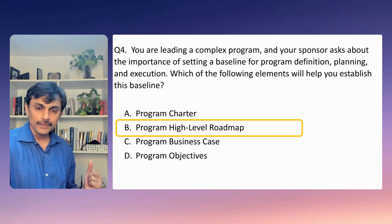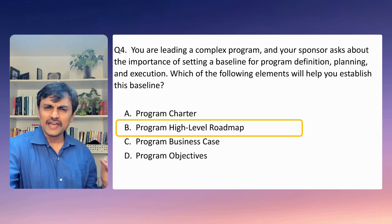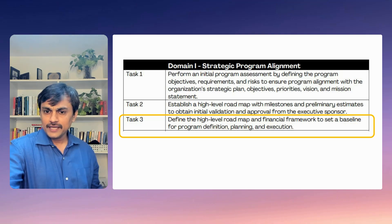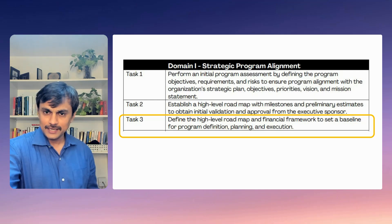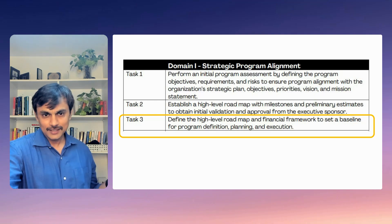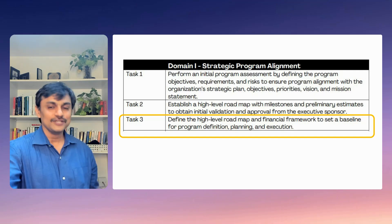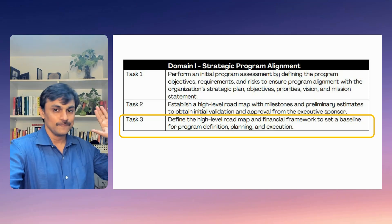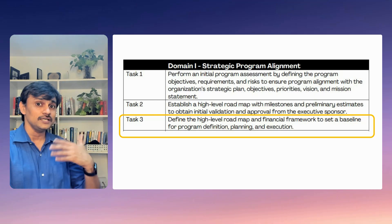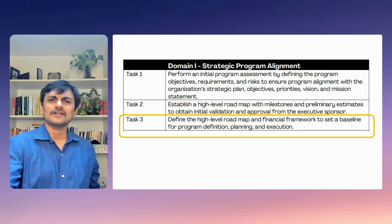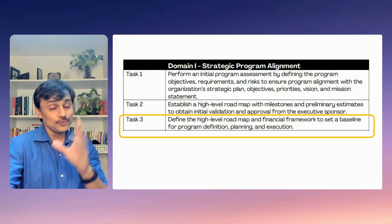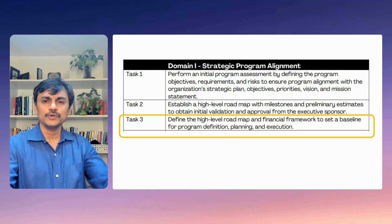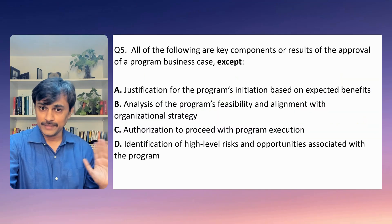This is another question directly from the exam content outline. Task three of strategic program alignment states: 'Define the high-level roadmap and financial framework to set a baseline for program definition, planning, and execution.' Questions can be framed directly from these ECO statements — they appear in mock exams and final exams. Even without memorizing the ECO, you can find the answer through elimination, but knowing the ECO statements makes the process faster and more certain.